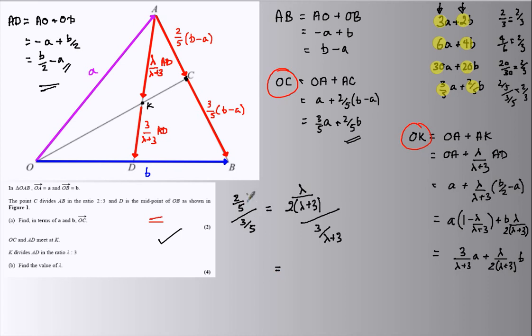If I multiply top and bottom of this fraction by 5, I'll see 2 over 3. And using a similar, slightly more awkward, but a similar trick here, I'm going to multiply top and bottom of this fraction by 2 lambda plus 6.